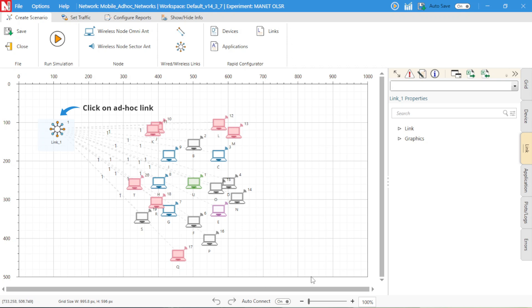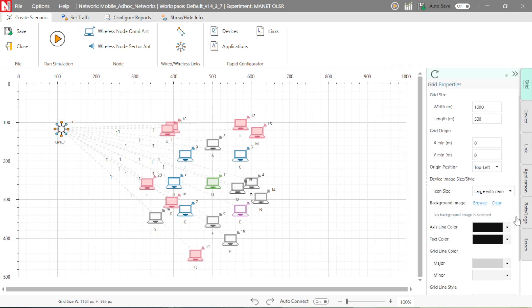Now click on the Ad Hoc link. Under Link Properties, expand the properties where users can configure medium properties. In this example, the channel characteristics are set to path loss only, and the path loss model is set to range based with a range set to 130 meters.